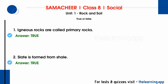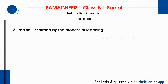Now true or false. First question: Igneous rocks is primary rocks. This is true. Second question: Slate is formed from shale. This is also true. Shale is a type of rock that under high temperature is converted to slate.